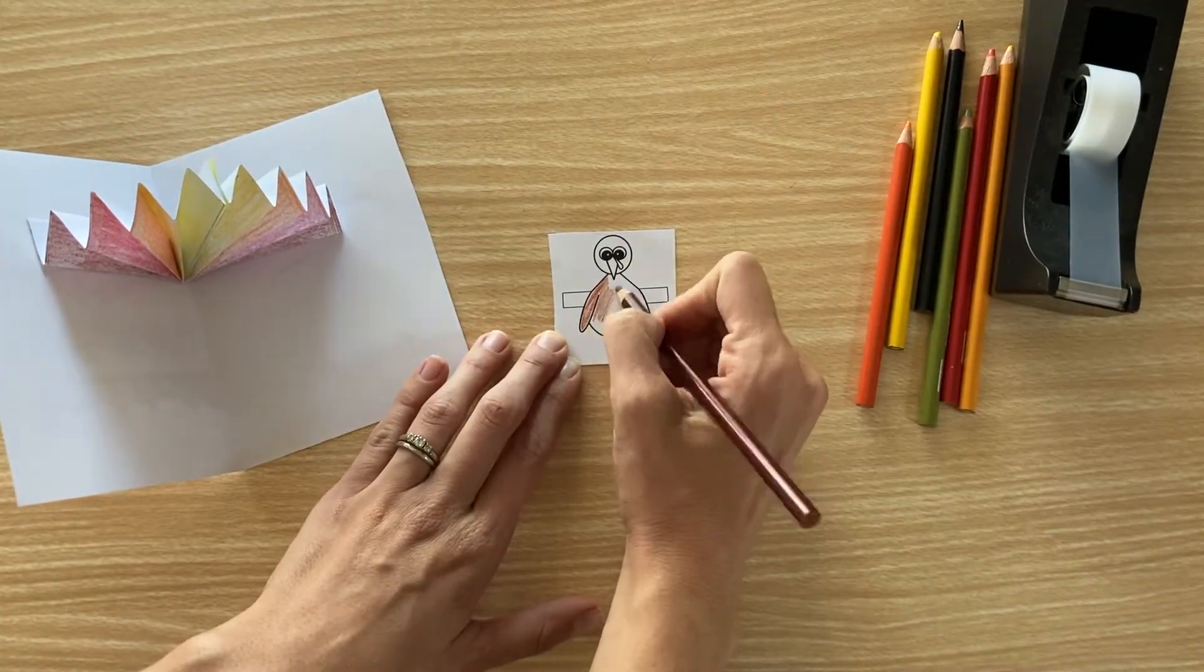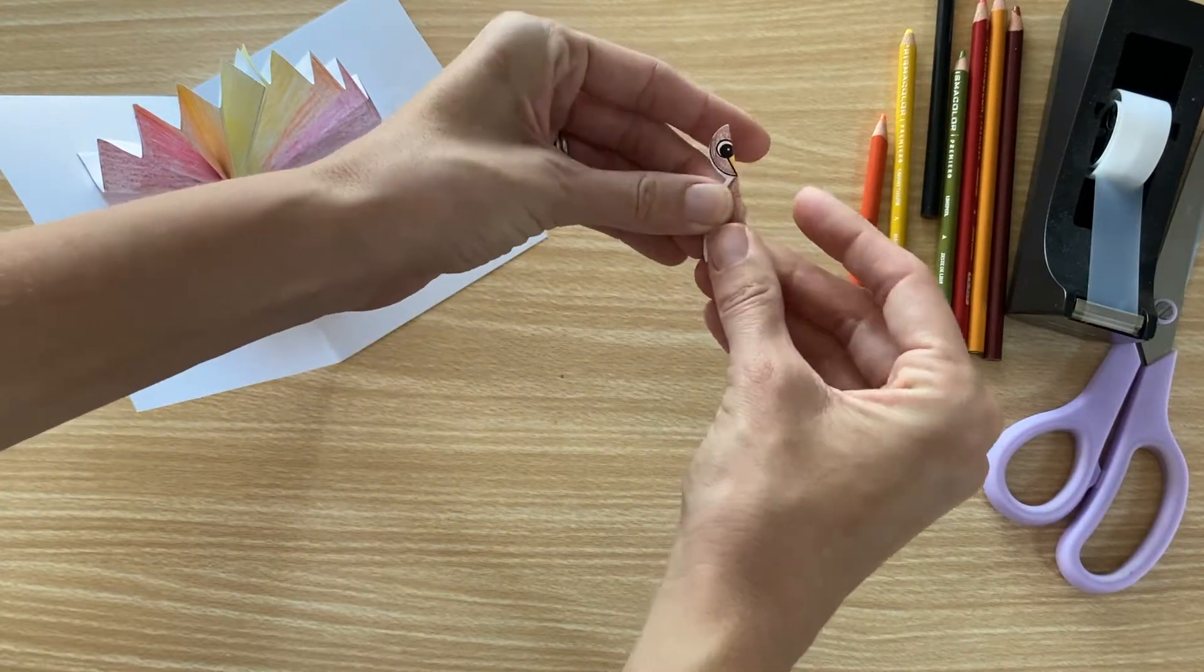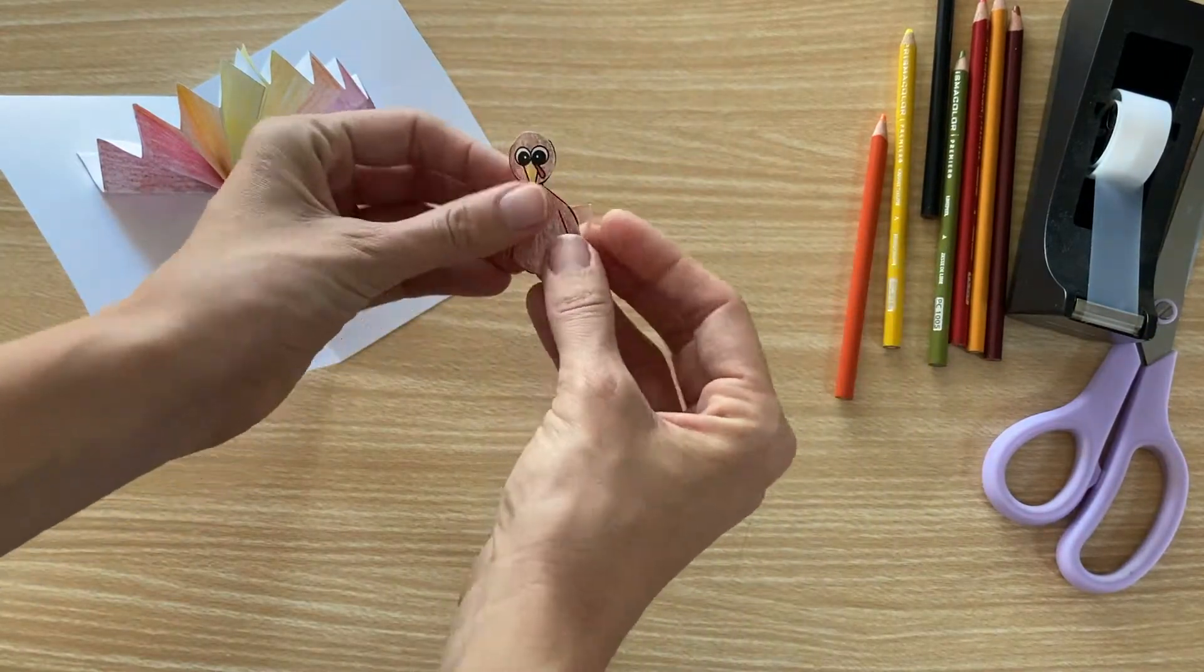Next, color the turkey and cut it out. Fold it backwards and crease well, then unfold.